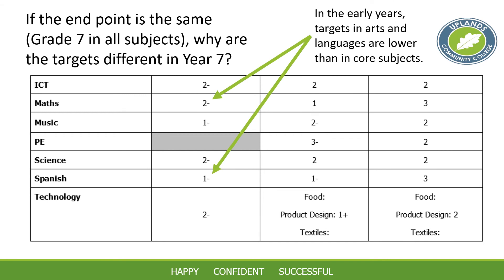One question I'm frequently asked is why there are different targets for the end of Year 7 for different subjects — some targets looking fairly low. Even though a student's end point in Year 11 would be the same across subjects, maths and Spanish can have different targets for the end of Year 7. I'll explain why on the next slides.